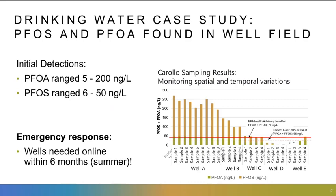I want to walk you through a PFOS and PFOA case study. This is a client who prefers to remain anonymous, but a couple of years ago they found PFAS in their well field, right after the health advisory level had been promulgated by the U.S. EPA. They found levels well above that 70 nanograms per liter, and this was an emergency response project — they needed those wells online within six months for their summer peak demand season. Well A and well B were well above the health advisory level, which they wanted to be below 80% of, so about 56 nanograms per liter.